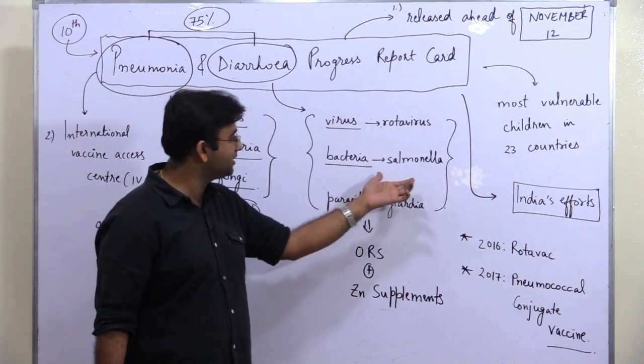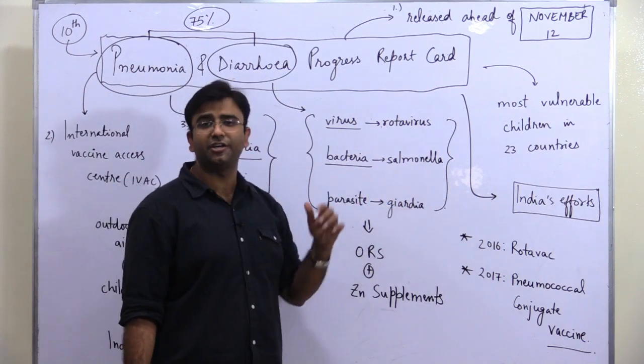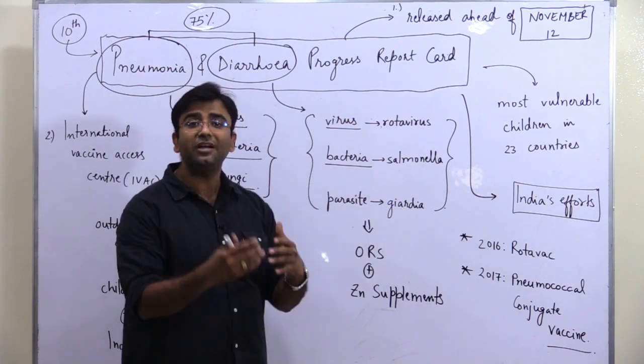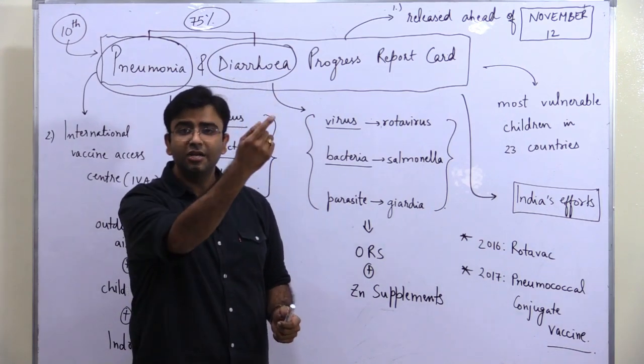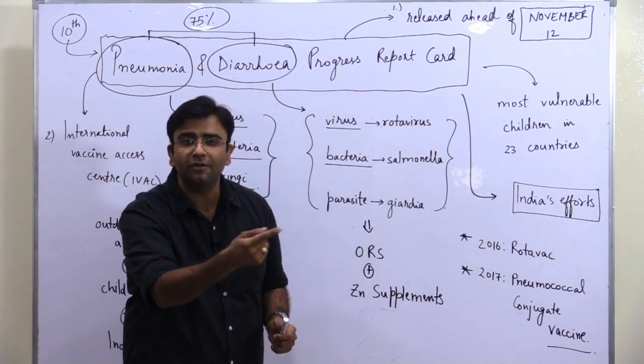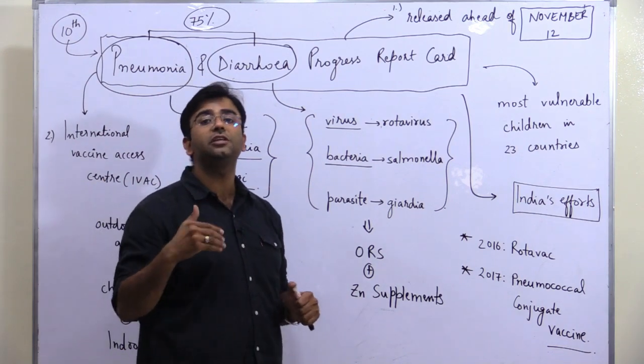It can be caused by bacteria such as salmonella, or by a parasite like giardia. UPSC might ask you which of the following are probable causes of diarrhea: number one virus, number two bacteria, number three parasite. A combination question UPSC can ask.